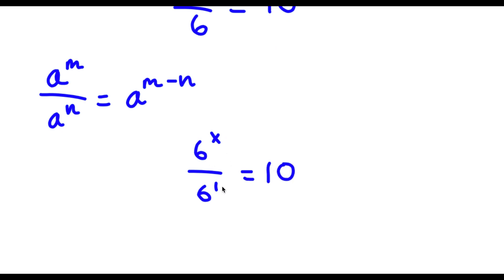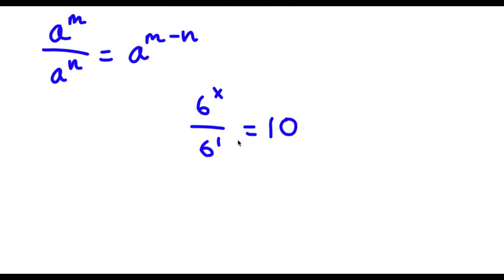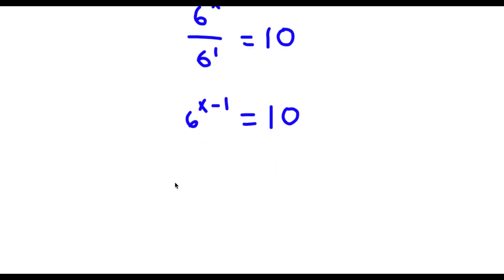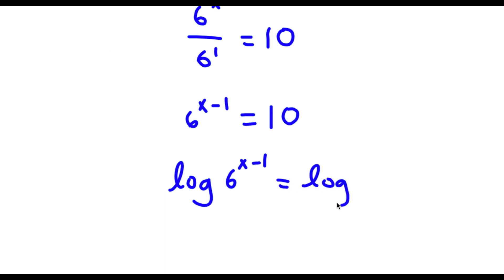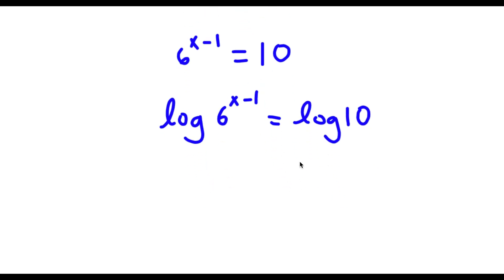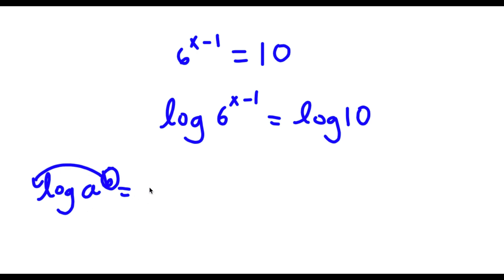So I have 6 to the power of x over 6 to the power of 1, and if you divide these two you get 6 to the power of x minus 1 is equal to 10. Now if I take the log on both sides I have log of 6 to the power of x minus 1 is equal to log 10. An important property of logarithms is that if I have something in the form log a to the power of b, I can move b to the front — so this equals b times log a.